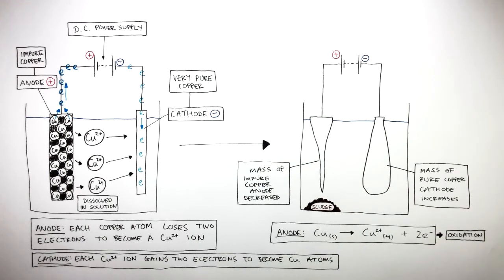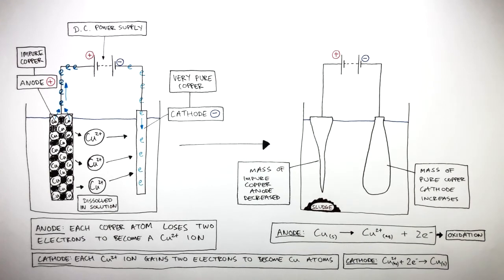And the half equation at the cathode is Cu2+(aq) plus two electrons reacts to form Cu(s). Each copper ion gains two electrons, so this is reduction.